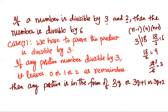Any number in the form 3q has no remainder — divisible by 3. In the form 3q plus 1, remainder is 1. In the form 3q plus 2, remainder is 2. This is written according to the division algorithm. So any number can be written as 3q, 3q plus 1, or 3q plus 2.